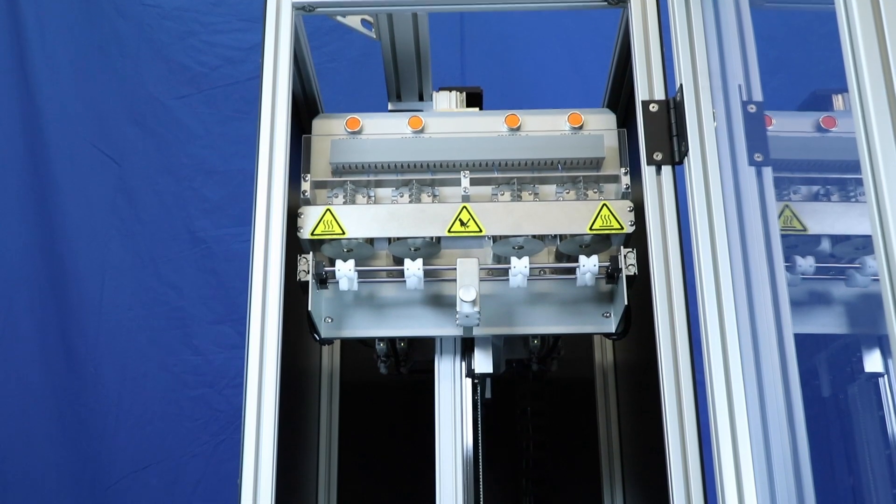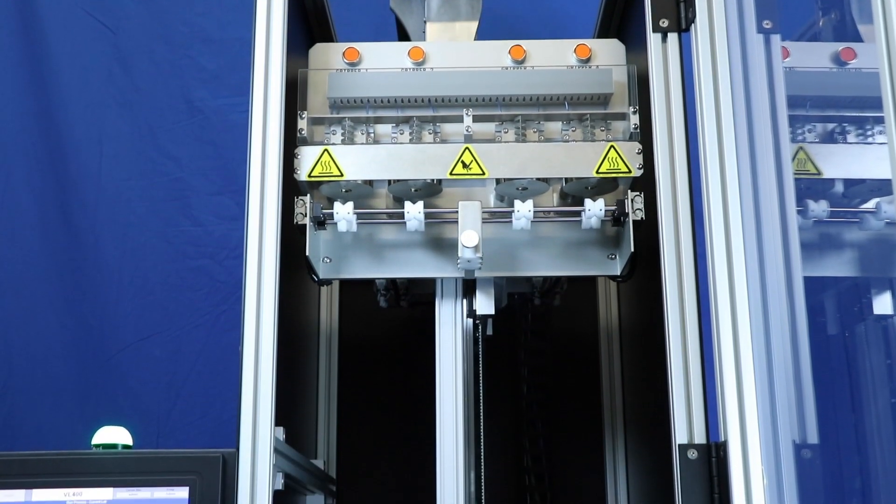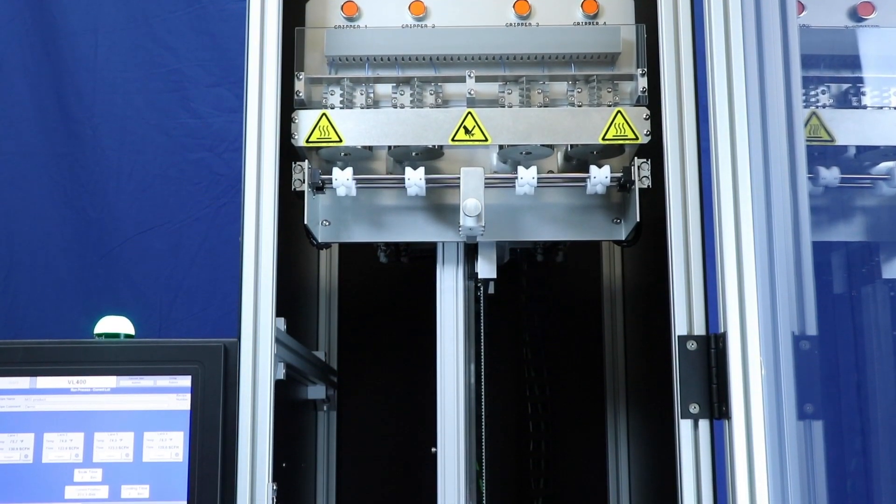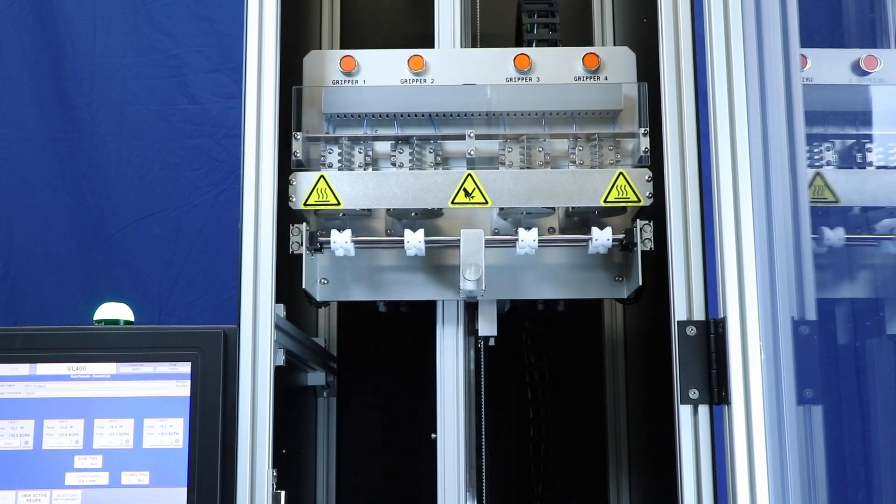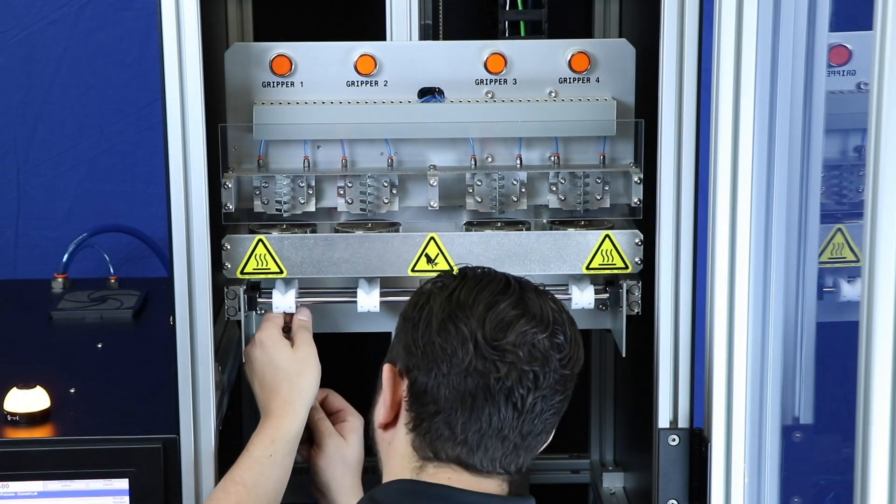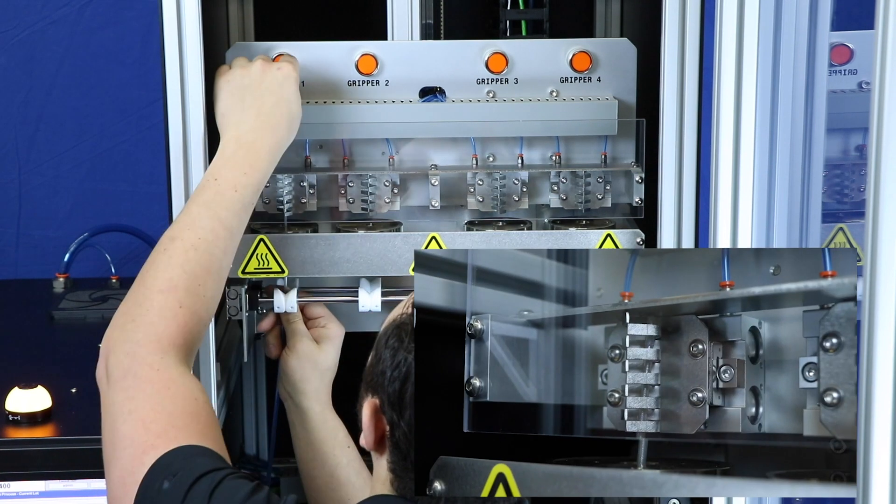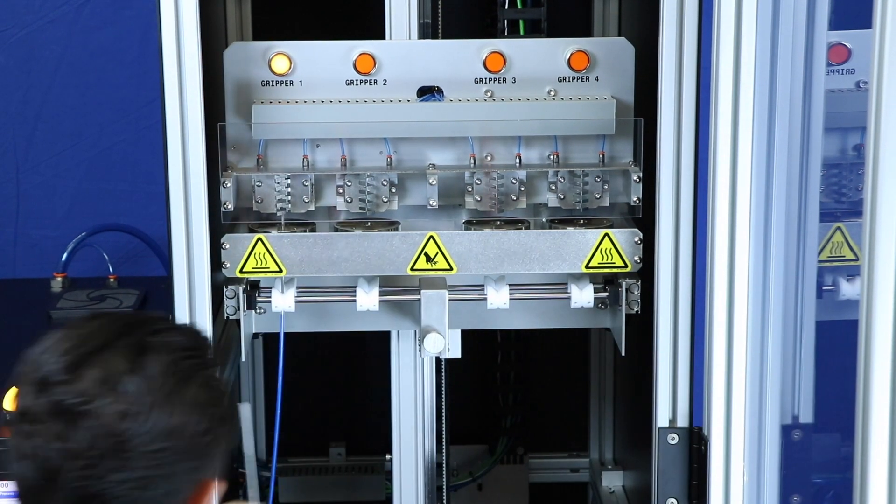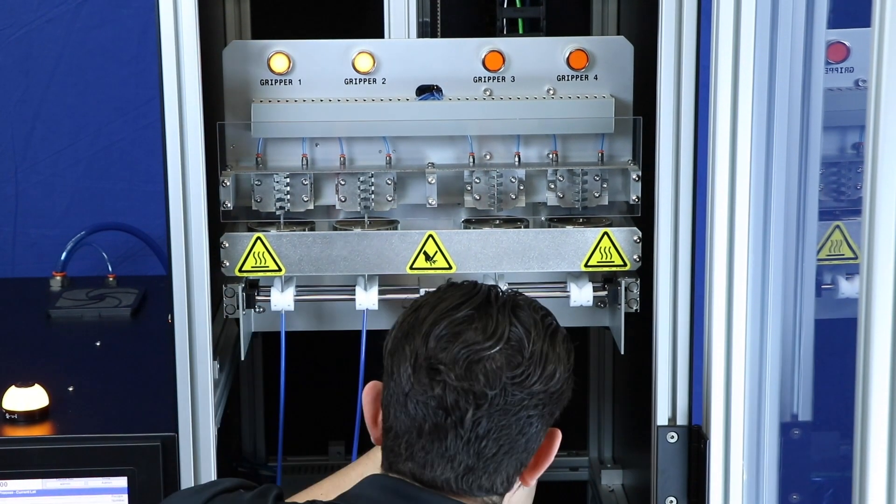At the start of processing, the gripper rack lowers to custom set loading heights, allowing different operators to set the most comfortable and efficient loading position. After the rack has reached the loading position, the operator loads each lane with product by sliding it through the centering guides and nozzles into the grippers.